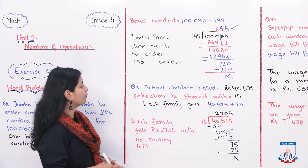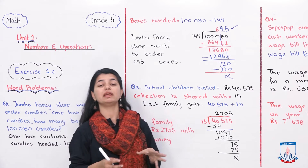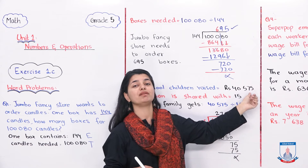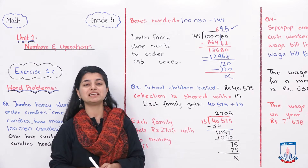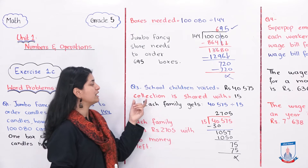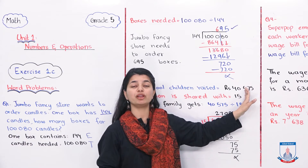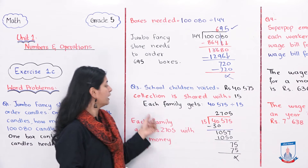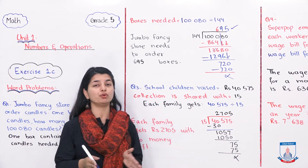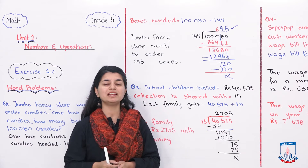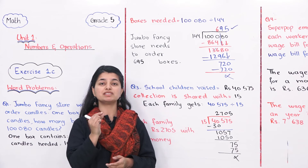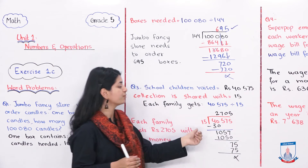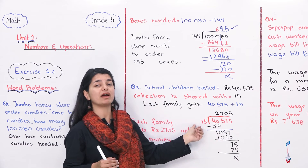Now we'll see question number 3. School children raised Rs 40,575 for donations and will divide this money among 15 families. The collection is shared among 15 families — how much will each family receive? I have the total and I know the number of families, but I don't know the amount for each. When they say 'each', we divide. So we divide 40,575 by 15.